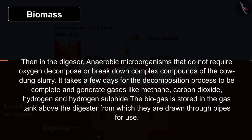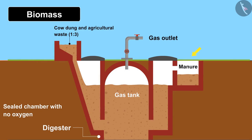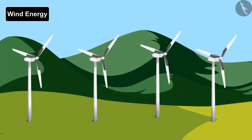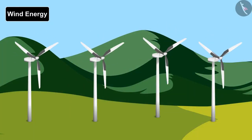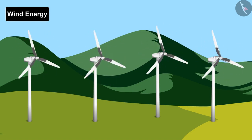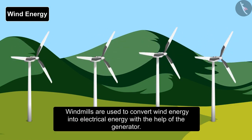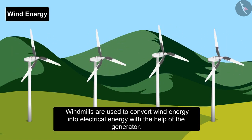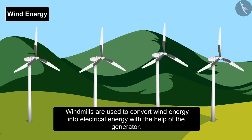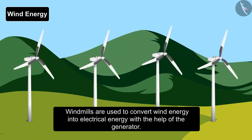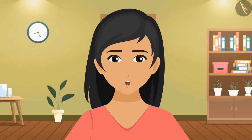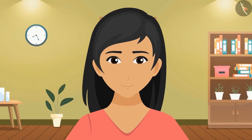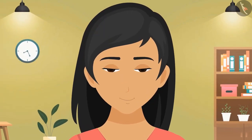The remains from the digester can be used as fertilizers in the fields. The last conventional source of energy is wind energy, which is harnessed where wind flows swiftly. Large wind wheels are used to convert wind energy into electrical energy with the help of a generator. We have now covered many conventional sources of energy. In our next video, we will learn about non-conventional sources of energy.